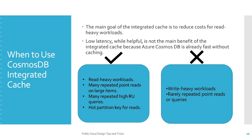Now, when should you use Cosmos DB integrated cache? The main goal of the integrated cache is to reduce cost for read-heavy workloads. Use it when your data is not changing frequently and you are reading the same data repeatedly. Specific scenarios include: many repeated point reads on large items, many repeated high request-unit queries where caching prevents regenerating those units each time, and hot partition or hot key queries.